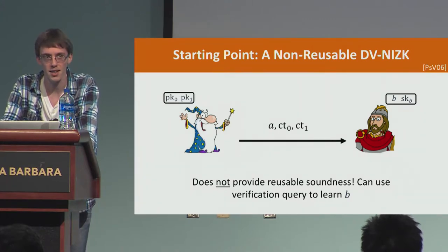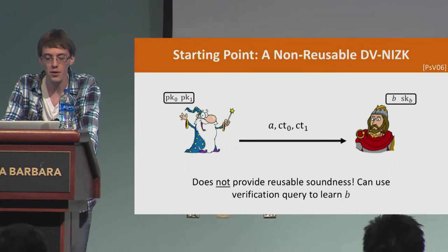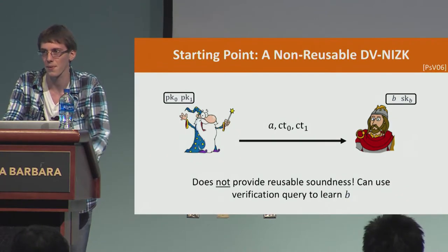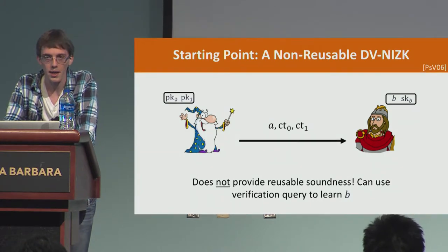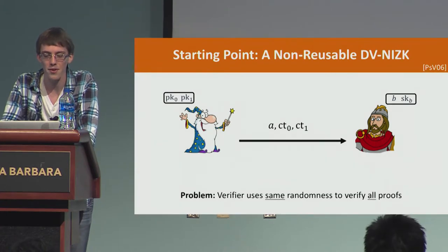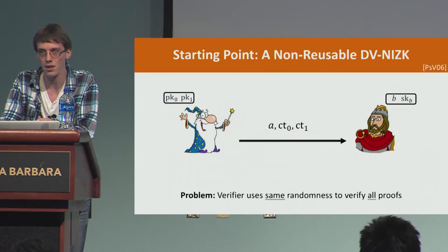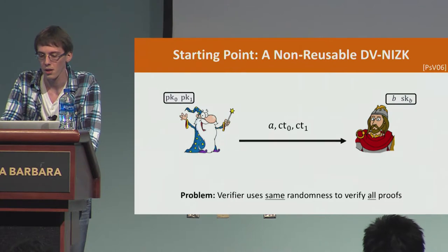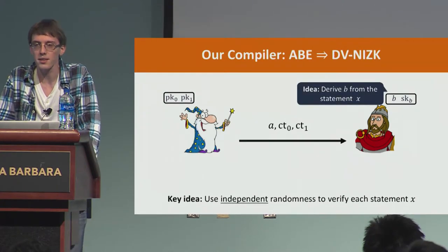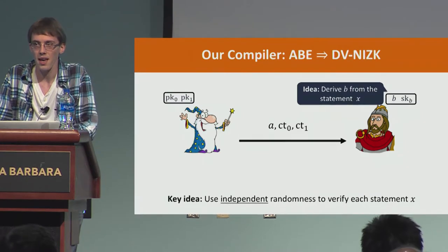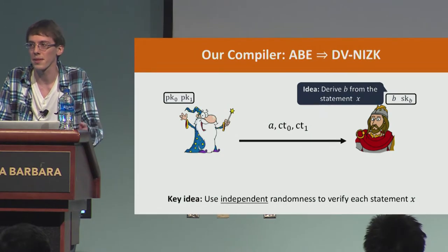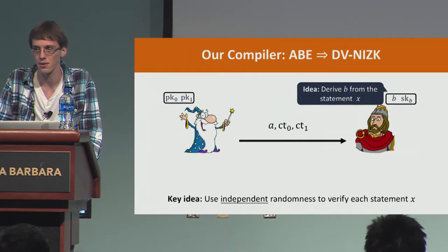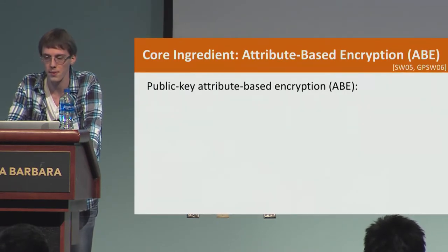This gives soundness one-half, and you can repeat in parallel to get negligible soundness. You can show it satisfies zero knowledge and soundness if you don't give the prover query access to the verifier — the prover doesn't know bit b, so you can reduce from soundness of the three-message protocol. However, this protocol does not satisfy the reusable soundness we want, because by querying the verifier you can learn bit b, and once you know it, soundness is entirely compromised. Fundamentally, the problem is the verifier has a fixed random bit b he's stuck using for every proof.